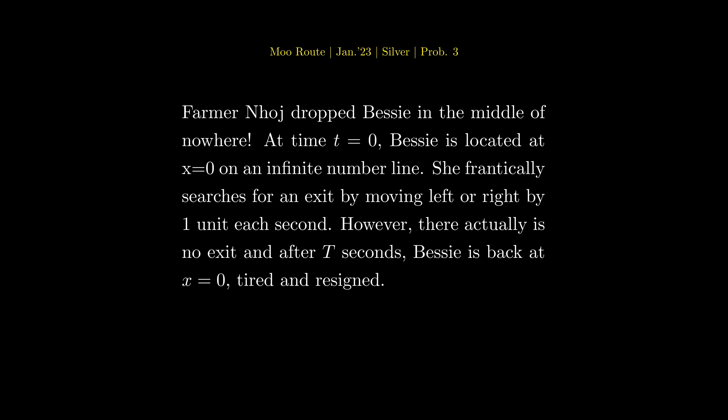Farmer Nhoj dropped Bessie in the middle of nowhere. At time t equals zero, Bessie is located at x equals zero on an infinite number line. She frantically searches for an exit by moving left or right by one unit each second. However, there actually is no exit, and after T seconds, Bessie is back at x equals zero, tired and resigned.